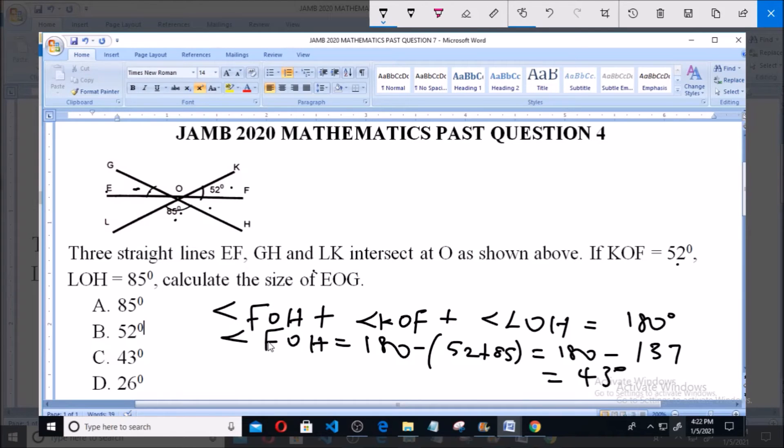43 degrees. So angle FOH is equal to 43 degrees. Now angle FOH is equal to angle EOG. This is because they are alternate angles. As you can see, angle FOH, this angle here, is equivalent to this...